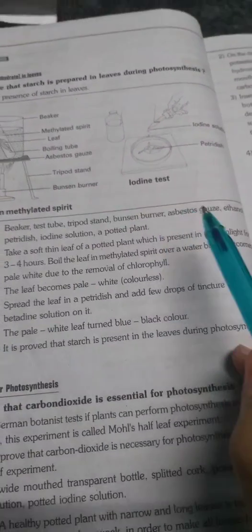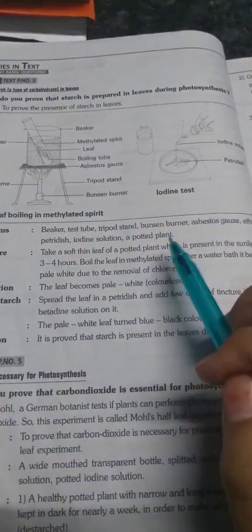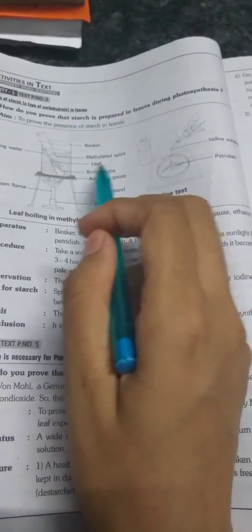Bunsen burner, asbestos gauze, ethanol, petri dish, iodine solution, and a potted plant. What do you mean by ethanol? Ethanol is nothing but methylated spirit. Methylated spirit means in the test tube we are adding methylated spirit.